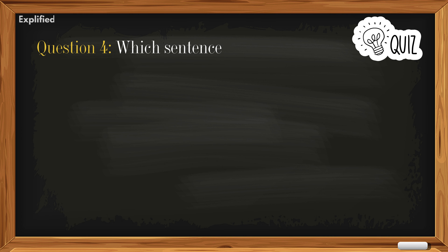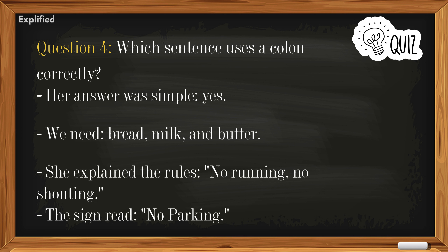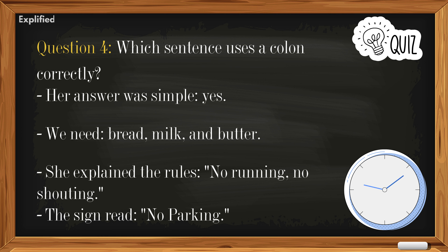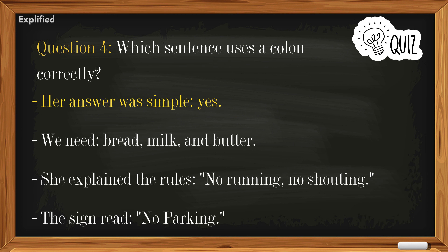Question four: Which sentence uses a colon correctly? A) Her answer was simple: yes. B) We need bread, milk, and butter. C) She explained the rules: no running, no shouting. D) The sign read, No parking. Answer: A) Her answer was simple: yes.